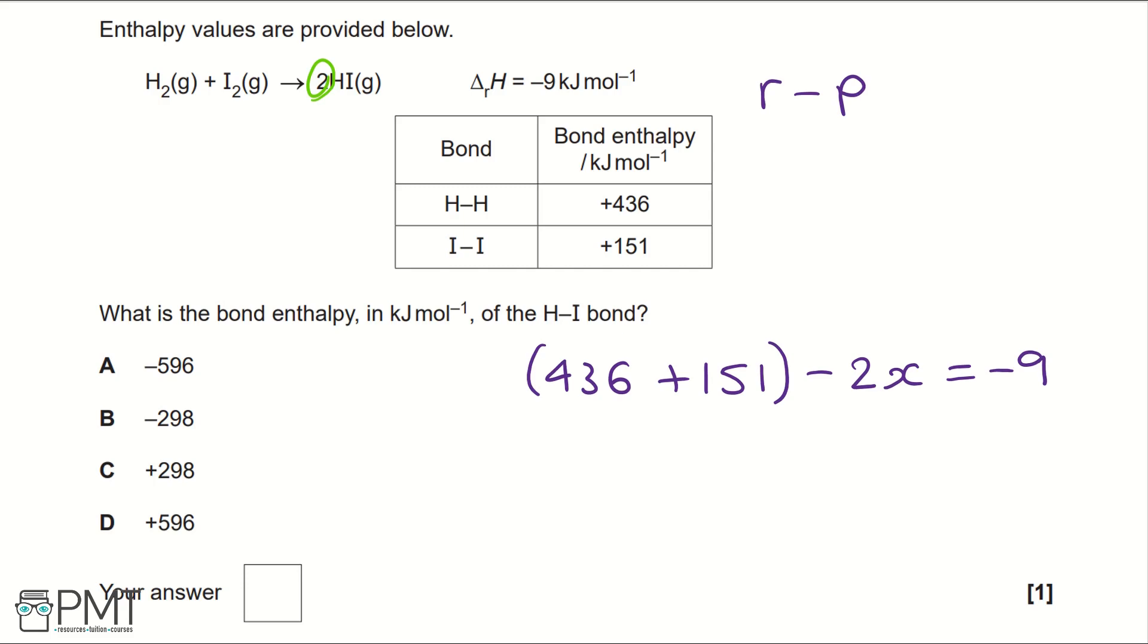So this gives us 587 minus 2x equals minus 9.